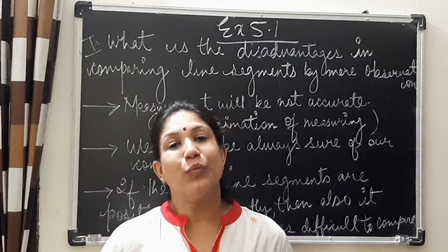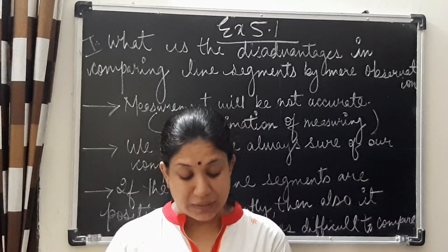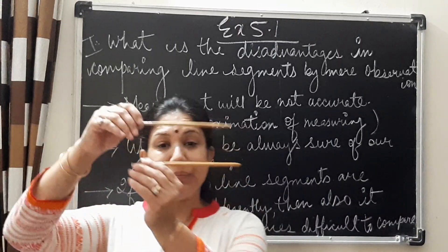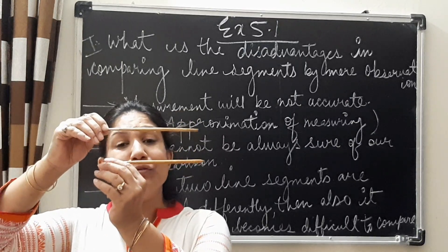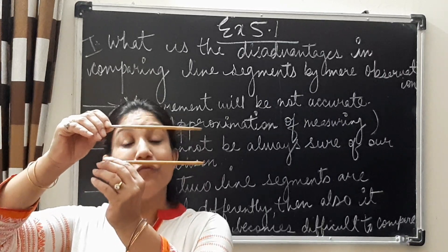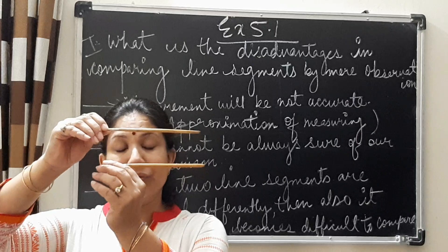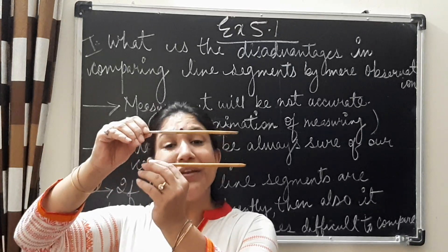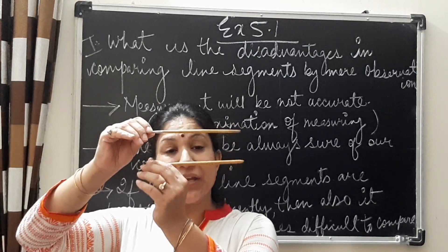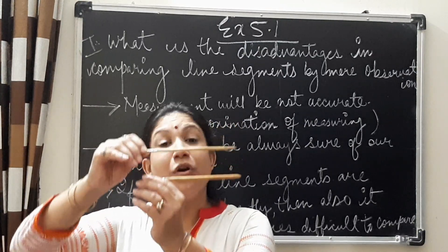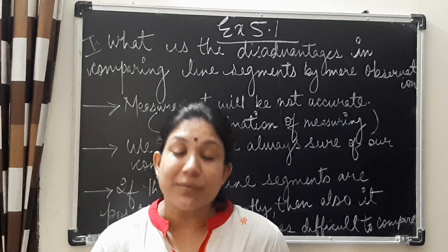But what about when the line segments are almost of the same measurement? Let me give you an example. Suppose these two are line segments. Can you observe and make a comparison which line segment is longer? No. It becomes difficult. Even if you say the first line segment is shorter than the second, you do not have the accurate measurement. You will simply give some approximations.